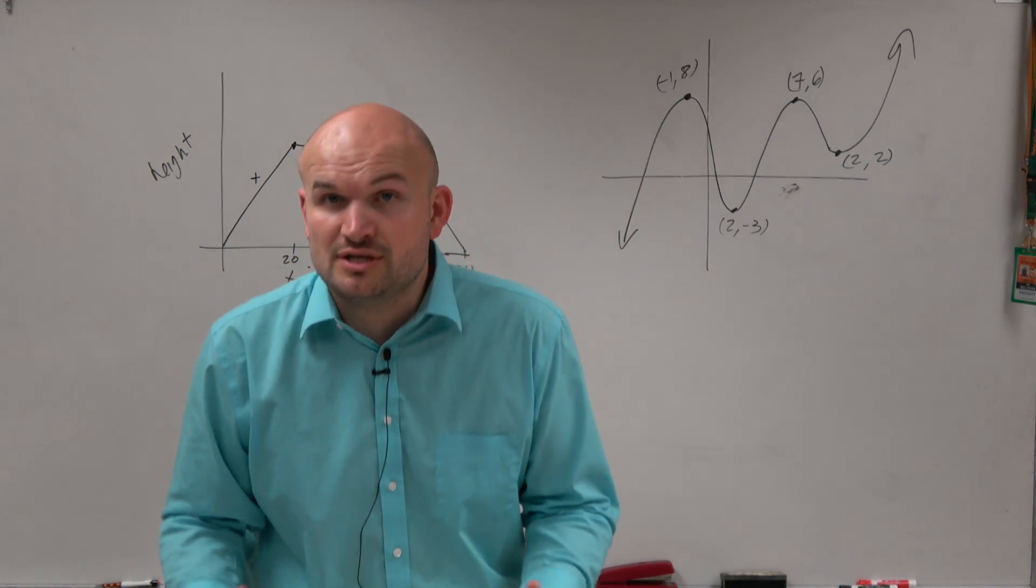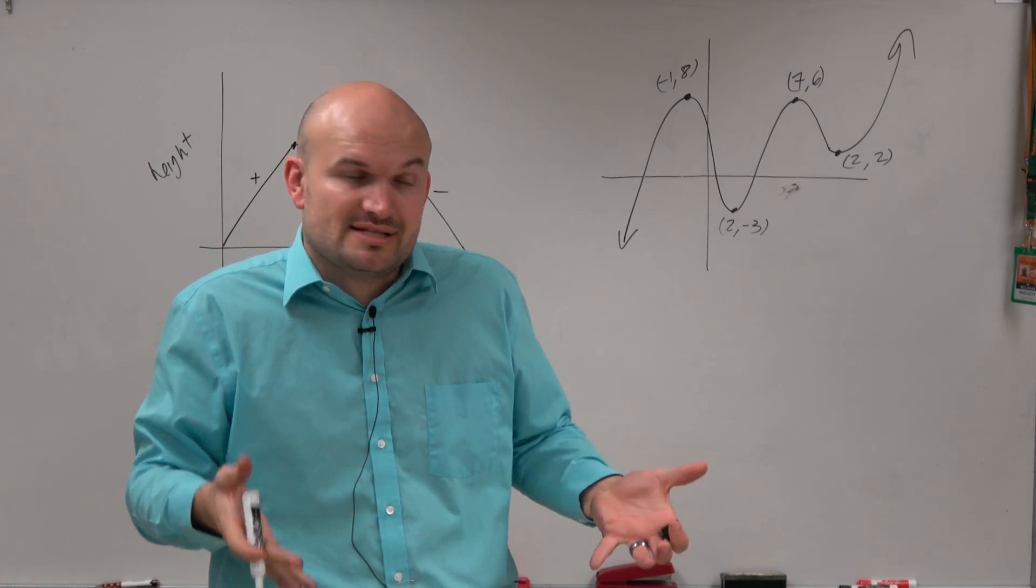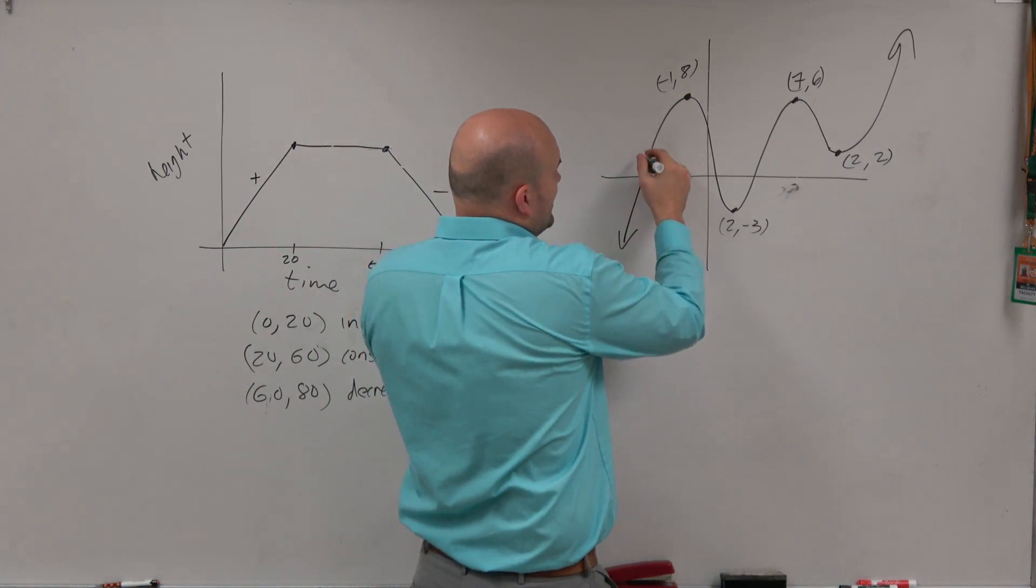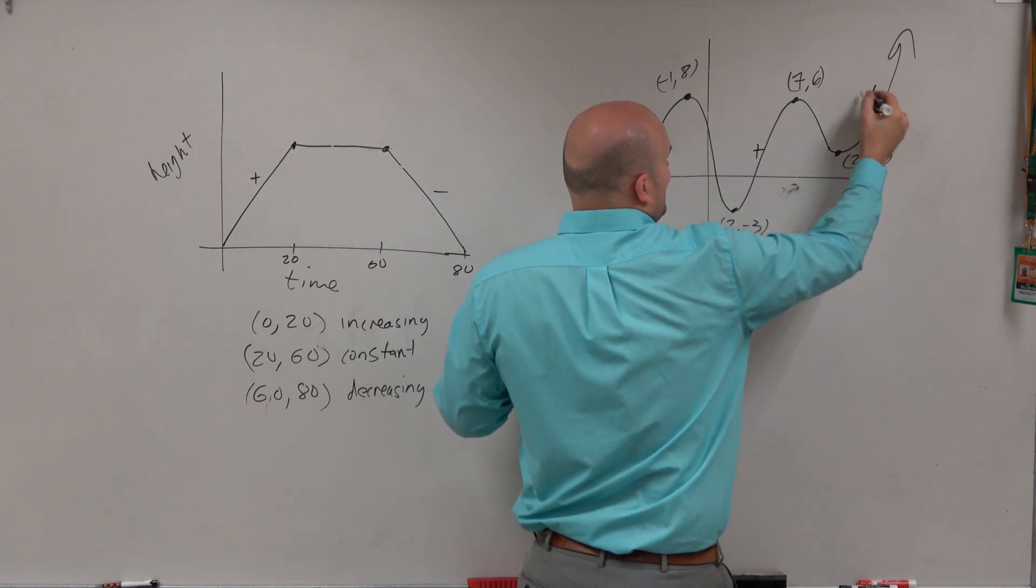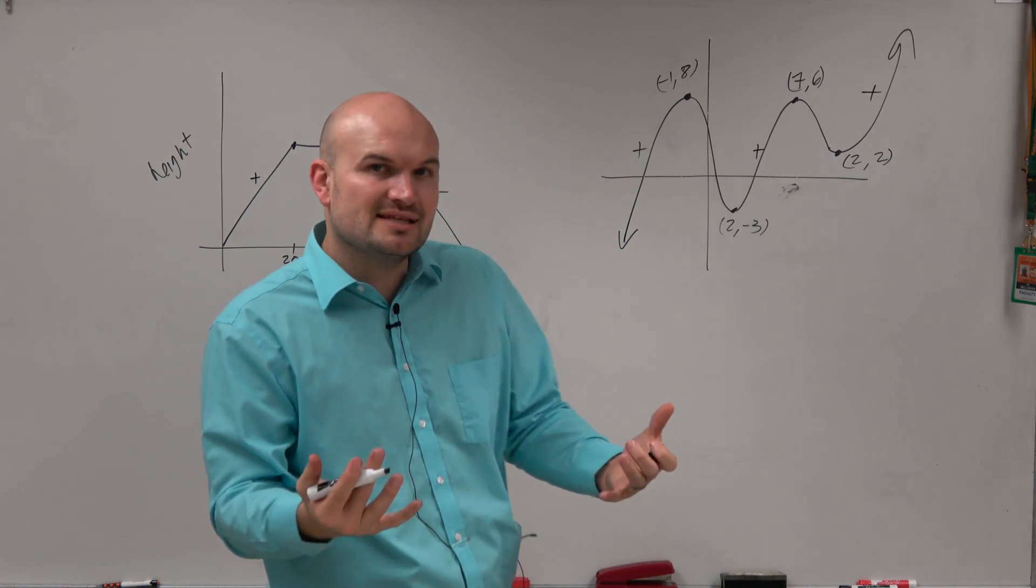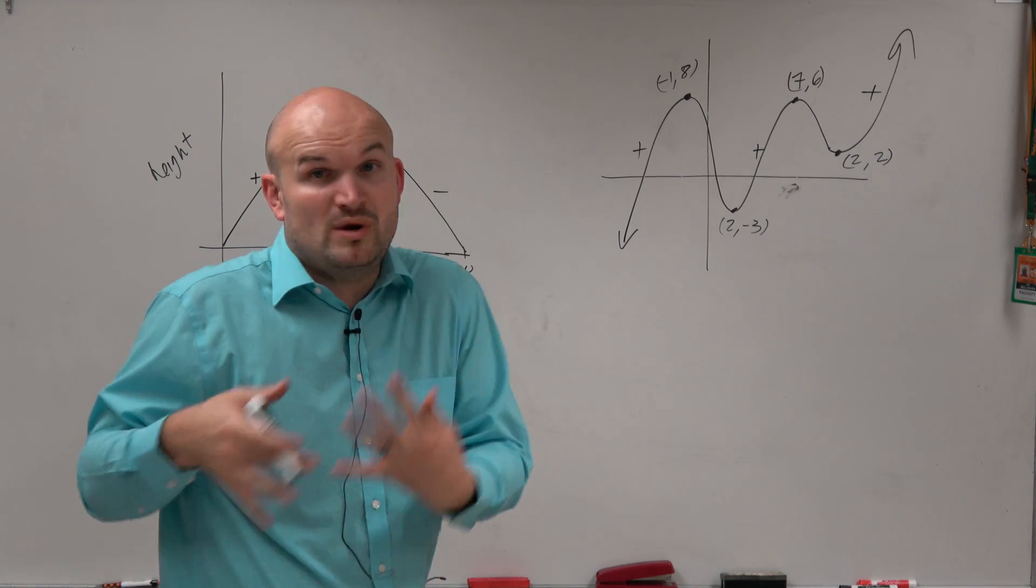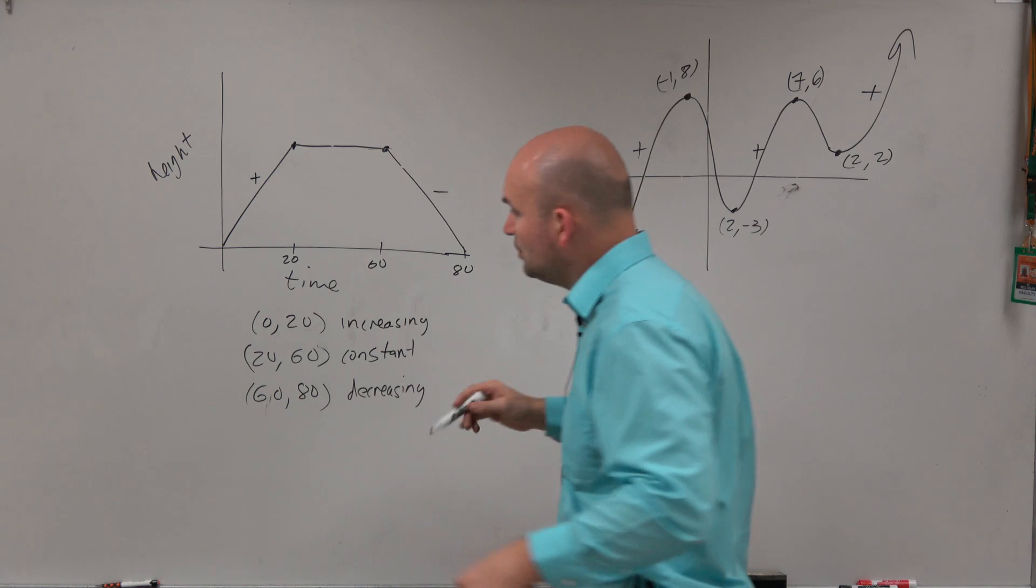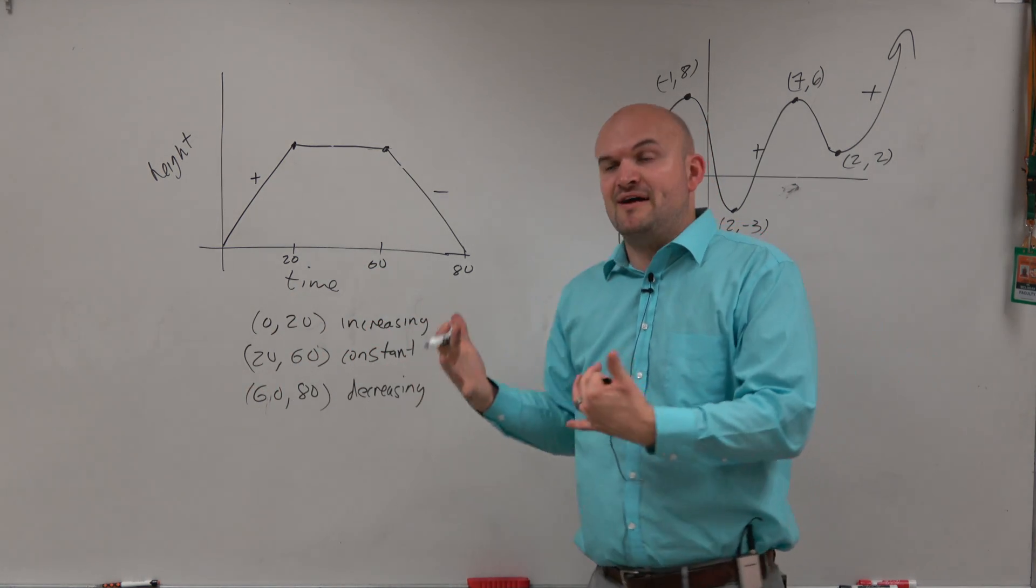So now, let's ask the same question. When is the graph increasing or decreasing? And again, what we're looking for is the positive slopes. So we see here positive slope, positive slope, positive slope. There's no constant in this example. So now what we want to do is write the values of when the graph is increasing. Well, if you notice, when the graph was increasing over here, we're looking for the x intervals when the graph was increasing.